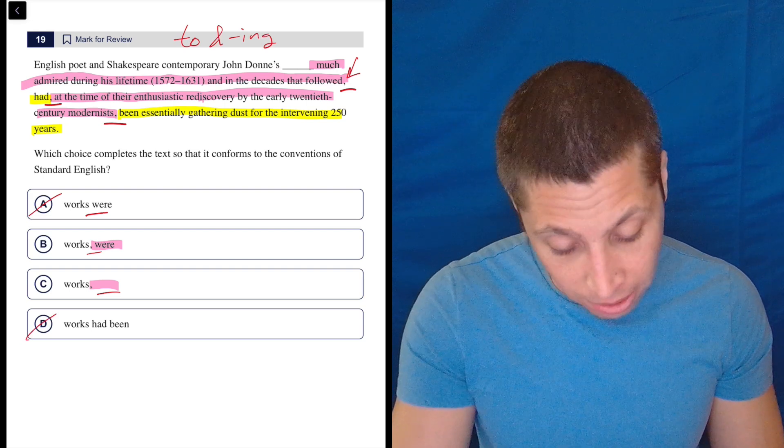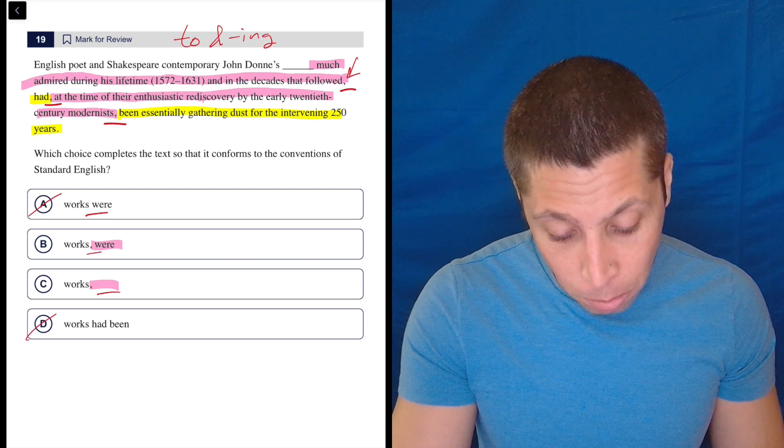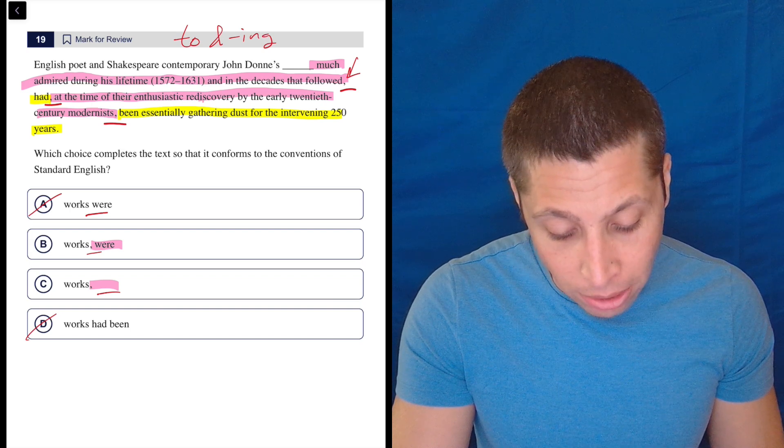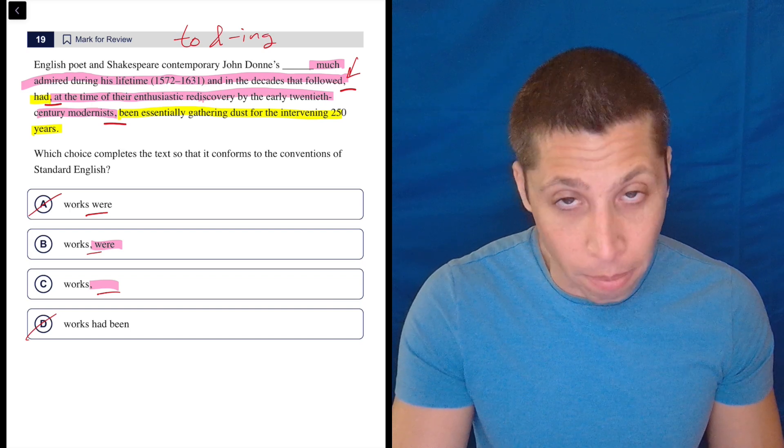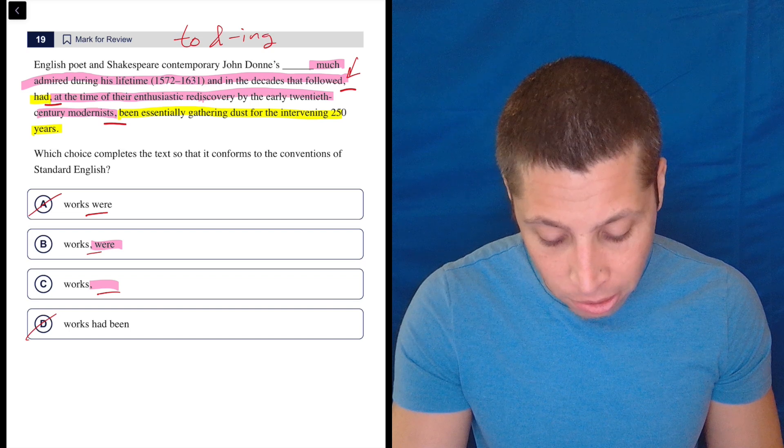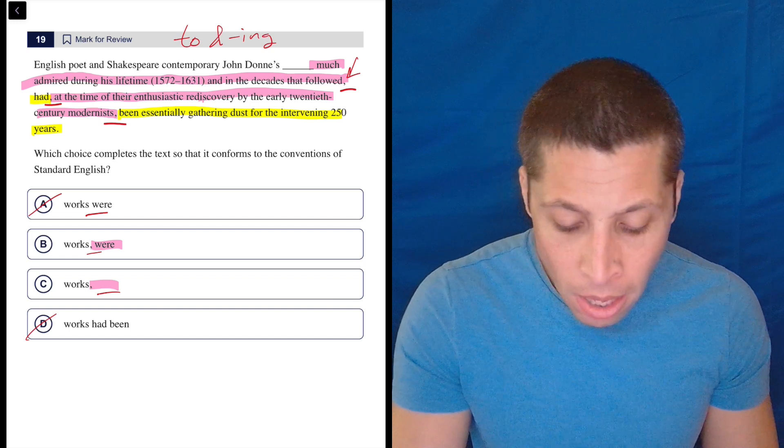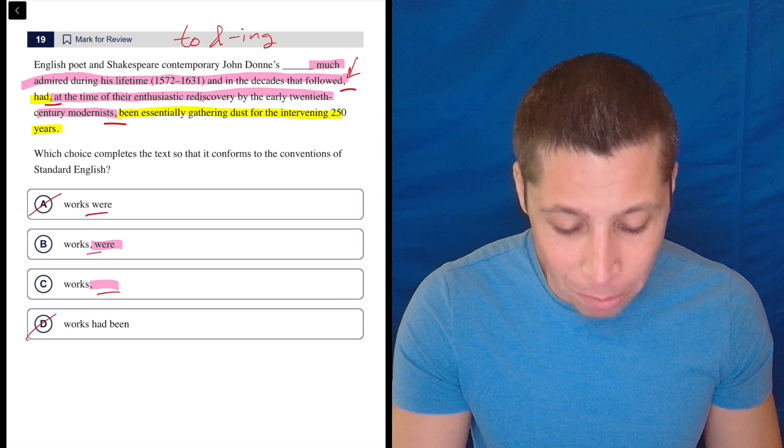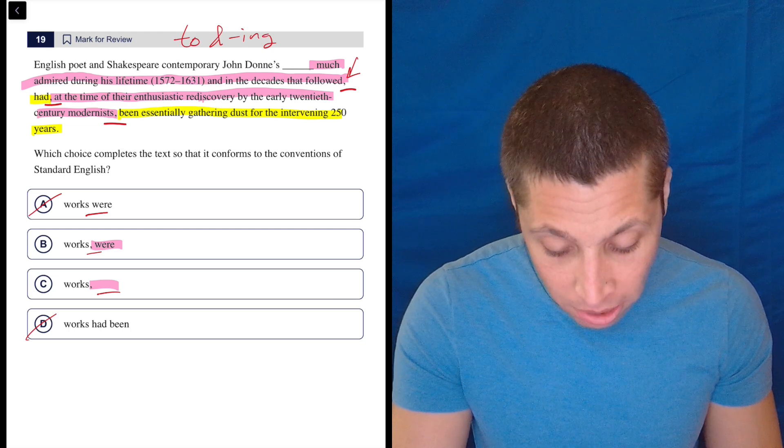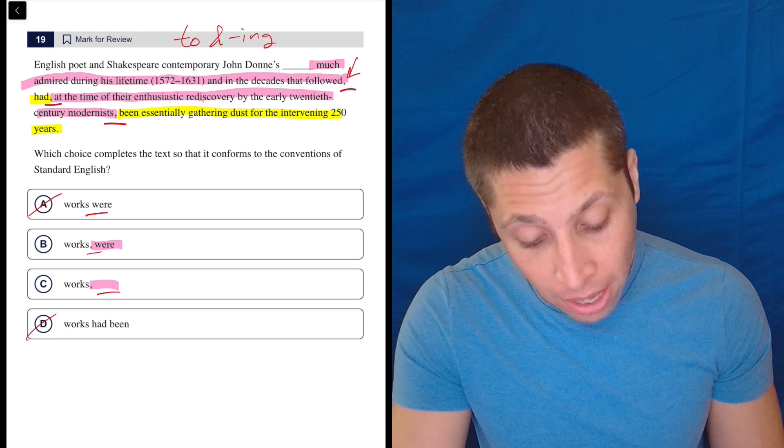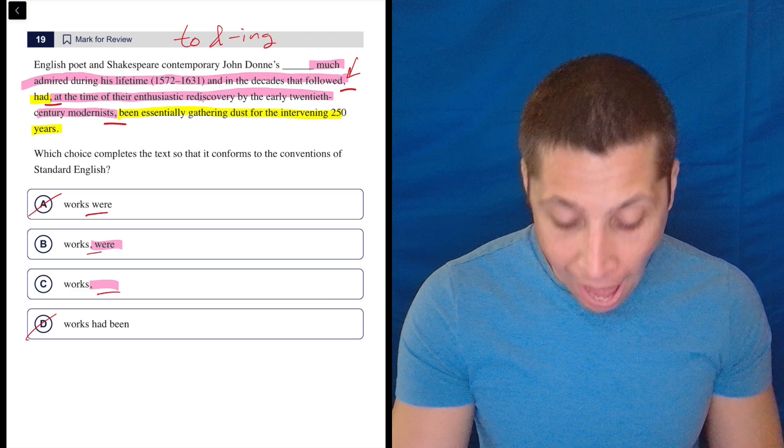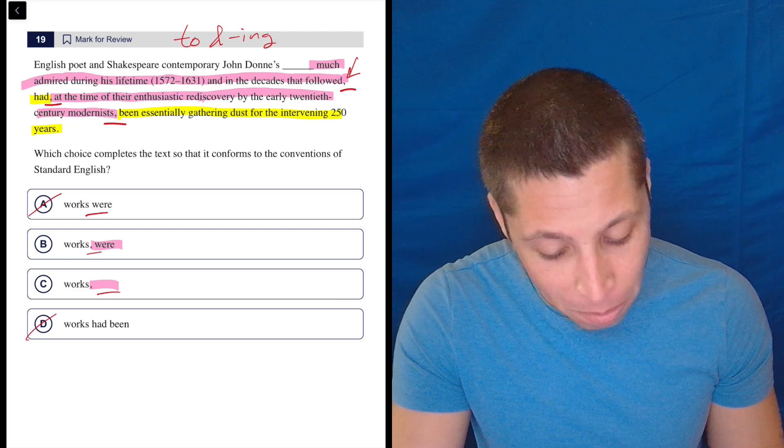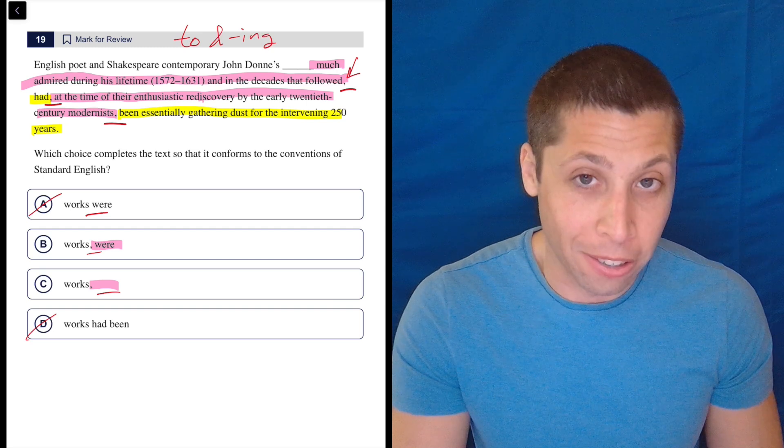So let's try out B and C. I don't think the word is going to make much sense there. But English poet and Shakespeare contemporary John Donne's works had been essentially gathering dust for the intervening 250 years. OK, I'm comfortable with that being the sentence. So let's try it now with the piece in. English poet and Shakespeare contemporary John Donne's works much admired during his lifetime in the decades that followed had at the time of their enthusiastic rediscovery by the early 20th century modernists been essentially gathering dust for the intervening 250 years.